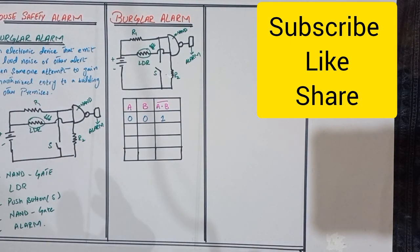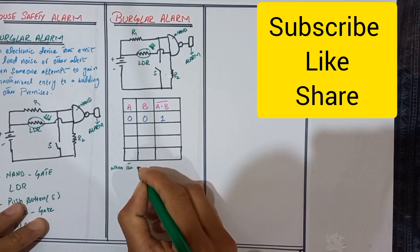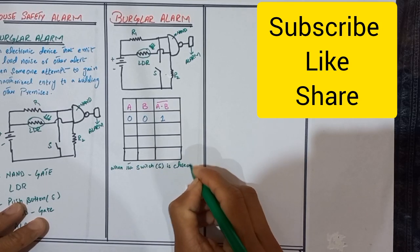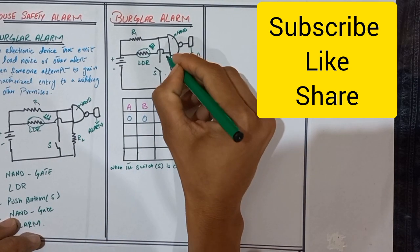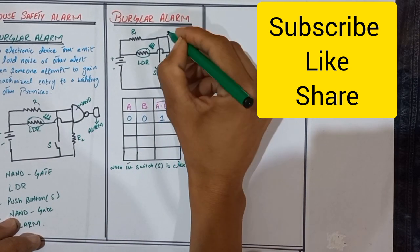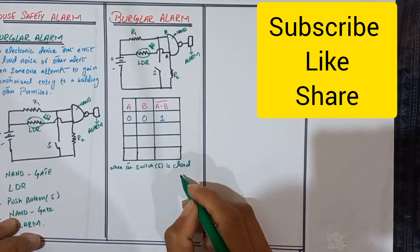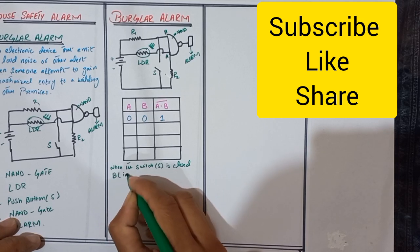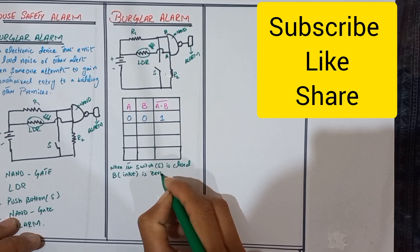How do we get output is 1 when the switch S is closed? Switch S is closed so switch S is connected to the NAND gate. We call this terminal A and this terminal is B. When the switch S is closed, B input is zero.